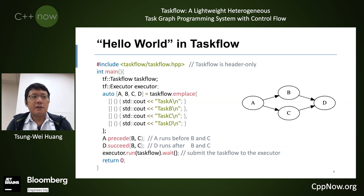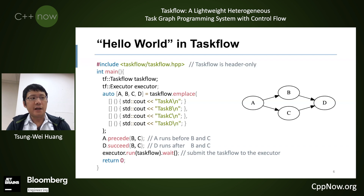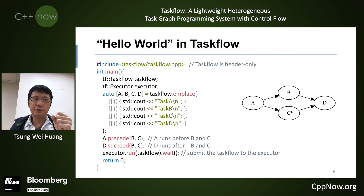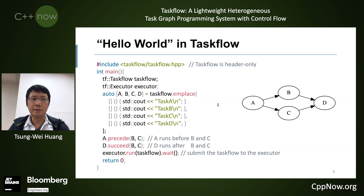Let's take a look at a very simple example in Taskflow. Suppose you want to do four things — A, B, C, D — each representing a function or a task. A has to run before B and C, and D has to run after B and C. When A finishes, B and C can run in parallel. When both B and C finish, D can start. And this is how it looks in Taskflow — only 15 lines of C++ code to get a parallel task execution.